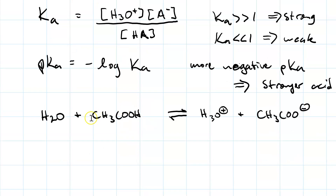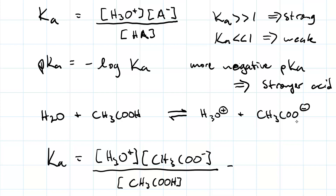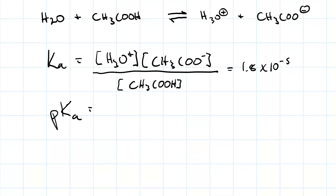For example, when you take acetic acid, whose condensed formula is CH3COOH, and you put it in water, you get hydronium and acetate. The Ka value equals the concentration of hydronium times the concentration of acetate over the concentration of unionized acetic acid, which equals 1.8 times 10 to the negative 5th. The pKa is the negative base-10 logarithm of 1.8 times 10 to the negative 5th, which equals 4.74.